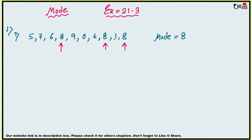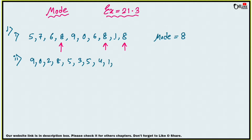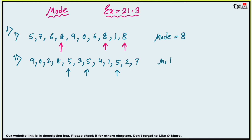The second set is: 9, 0, 2, 8, 5, 3, 5, 4, 1, 5, 2, 7. Here the number 5 occurs maximum times — one, two, three times — so mode equals 5.